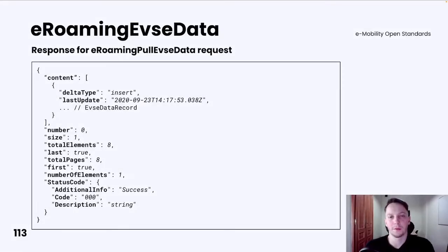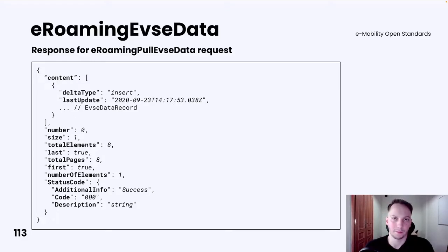The response for the eRoaming pull EVSE data request is a list of EVSE data records. Each EVSE data record includes lastUpdate and deltaType attributes as mentioned before. The returned list of EVSE data records is in a paginated format.